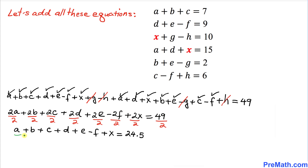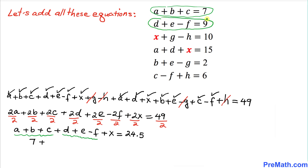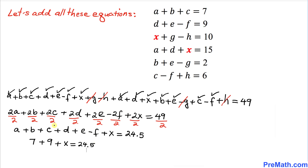Now let's look at the terms a plus b plus c — from our first equation that equals 7, so we replace it with 7. Then d plus e minus f — from our second equation that equals 9, so we replace it with 9. That gives us 7 plus 9 plus x equals 24.5.